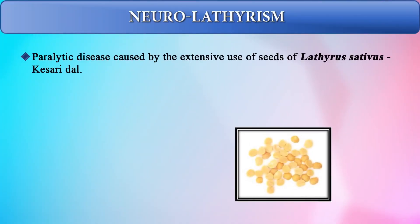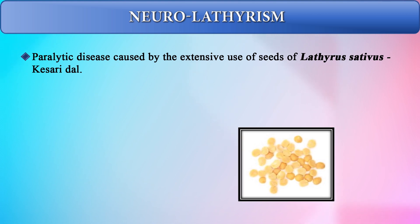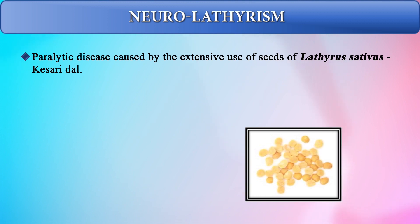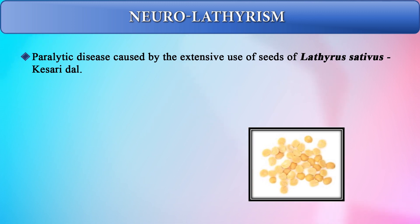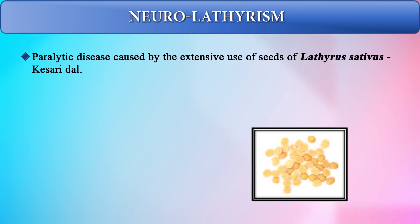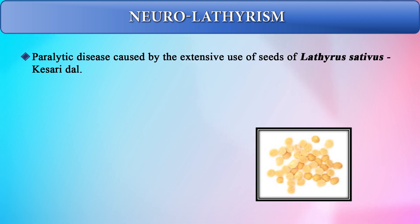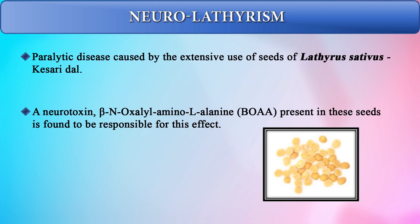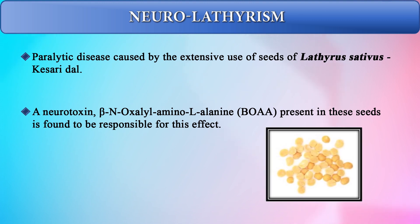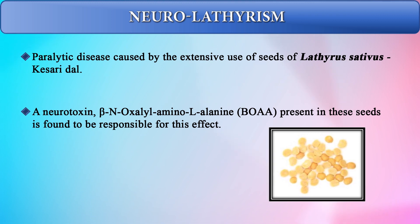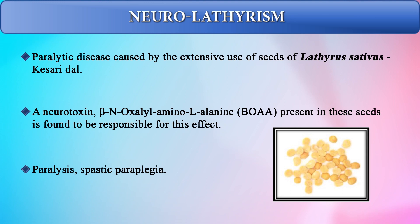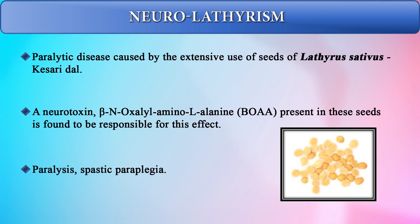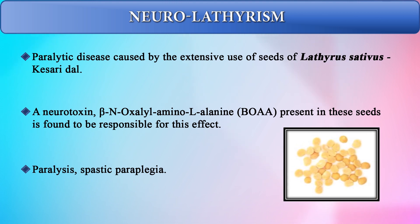Neurolathyrism is a paralytic disease caused by the extensive use of seeds of Lathyrus sativus, called kesari dal — also referred to as a poor man's dal. It was used extensively in Madhya Pradesh, where people complained of paralysis and spastic paraplegia. A neurotoxin called beta-N-oxalyl-amino-L-alanine (BOAA) present in the seeds is responsible for this effect. These seeds look very similar to arhar or tuvar dal, so we must be very careful in our food choices.